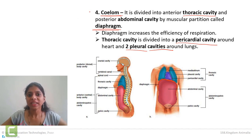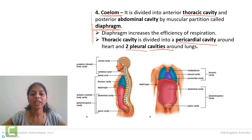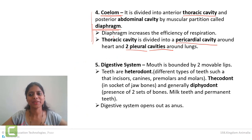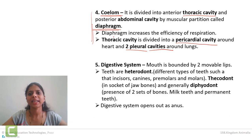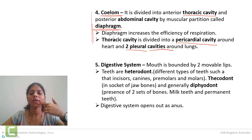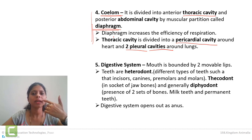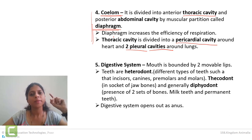Now let us shift to the digestive system. The digestive system always opens with the mouth and ends with the anus in mammals. But the mouth is covered by lips. Lips are the covering of the mouth cavity. Lips are present only in mammals — no other animals show the presence of lips.